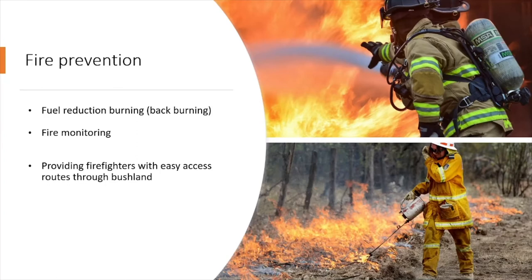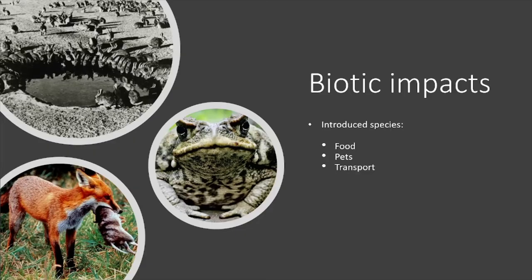When it comes to preventing fire, ecosystems don't really have a way of preventing fires themselves, and some actually require fire for different seeds to germinate properly. Our methods of prevention include fuel reduction burning or back burning, monitoring of fires to track their location, and providing firefighters with easy access routes through bushland.